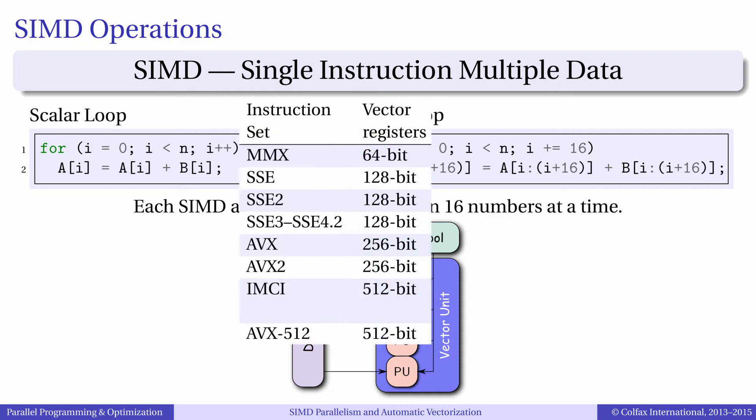The value 16 is only an example. The actual width of vectors depends on the data type and on the vector instruction set.